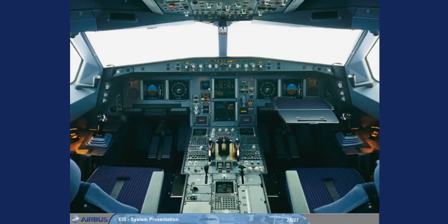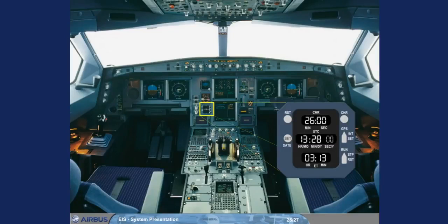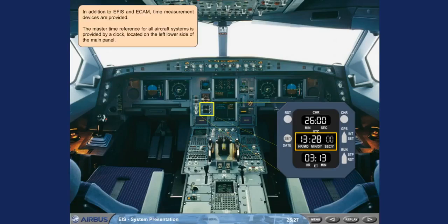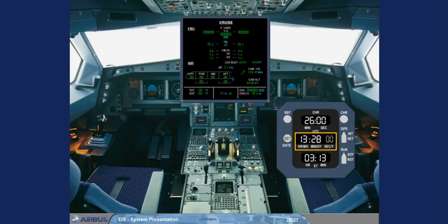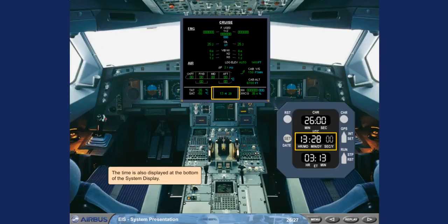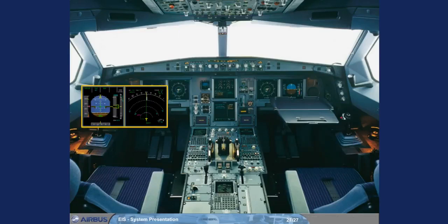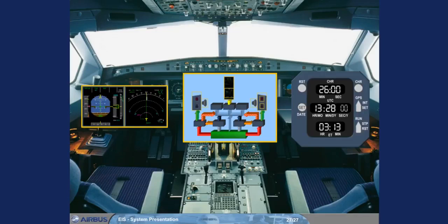In addition to EFIS and ECAM, time measurement devices are provided. The master time reference for all aircraft systems is provided by a clock located on the left lower side of the main panel. The time is also displayed at the bottom of the System Display. In this module, we have introduced you to the Electronic Instrument System with its two subsections, EFIS and ECAM, and the clock. In the next modules, we will concentrate mainly on the ECAM system, and then later in the course return to look at the EFIS displays in greater detail.